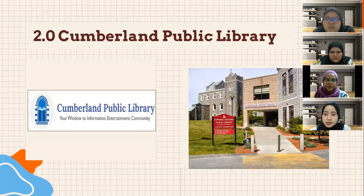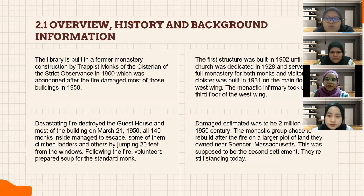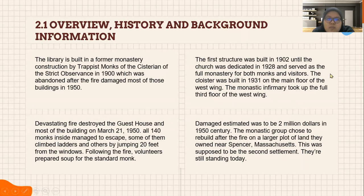The next library is the Cumberland Public Library: overview, history, and background information. The library is built in a former monastery constructed by Trappist monks of the Cistercians of the Strict Observance in 1900, which was abandoned after fire damage. The first structure was built in 1902 until the church was dedicated in 1928, and it served as the full monastery for both monks and visitors. The cloister was built in 1931 on the main floor of the west wing.